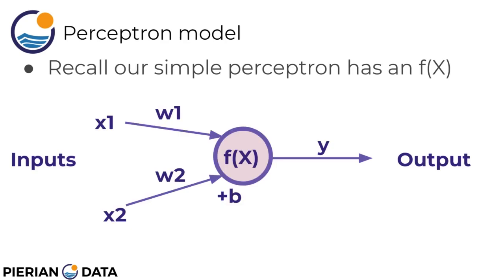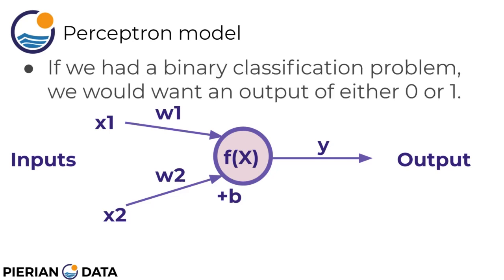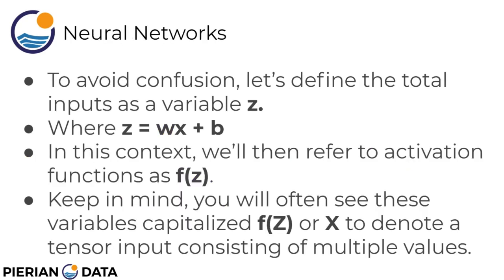Recall the simple neuron or perceptron model has f of x, so we have those x's times their weights plus the bias of that neuron. You can imagine if we had a binary classification problem we would want an output of either 0 or 1. As a quick note, to avoid confusion I'm going to define the total inputs as this variable z where z is equal to wx plus b. In this context of a neural network, I'm really going to pass in that z term into the activation function.